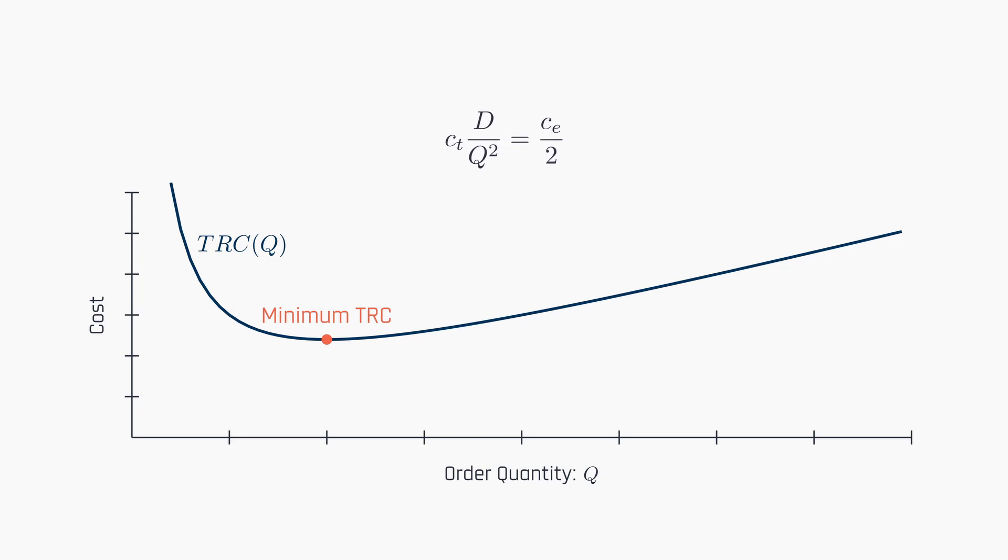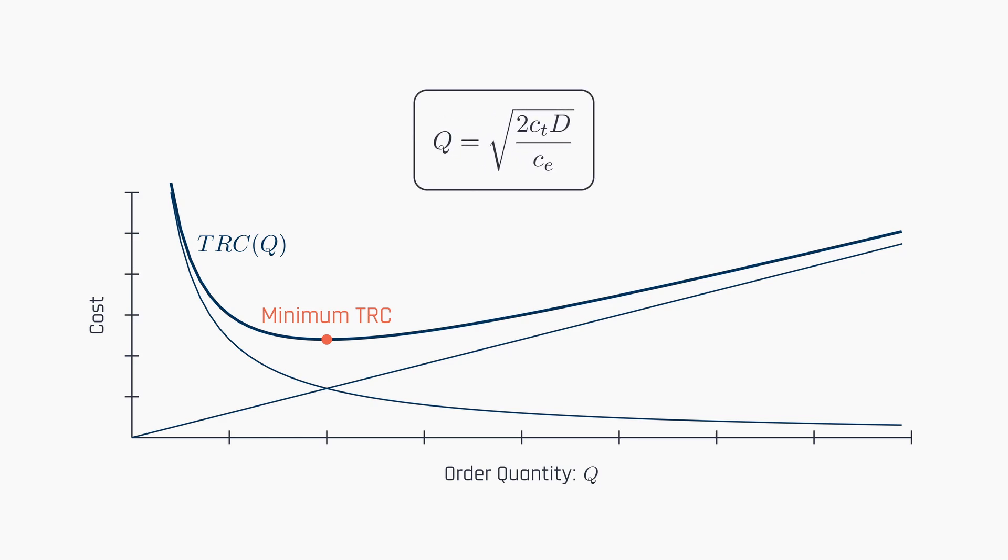Algebraic manipulation of the cost minimization equation reveals the condition where holding and setup costs are equal, providing its mathematical basis. We have successfully derived the well-known square root formula of the EOQ model.